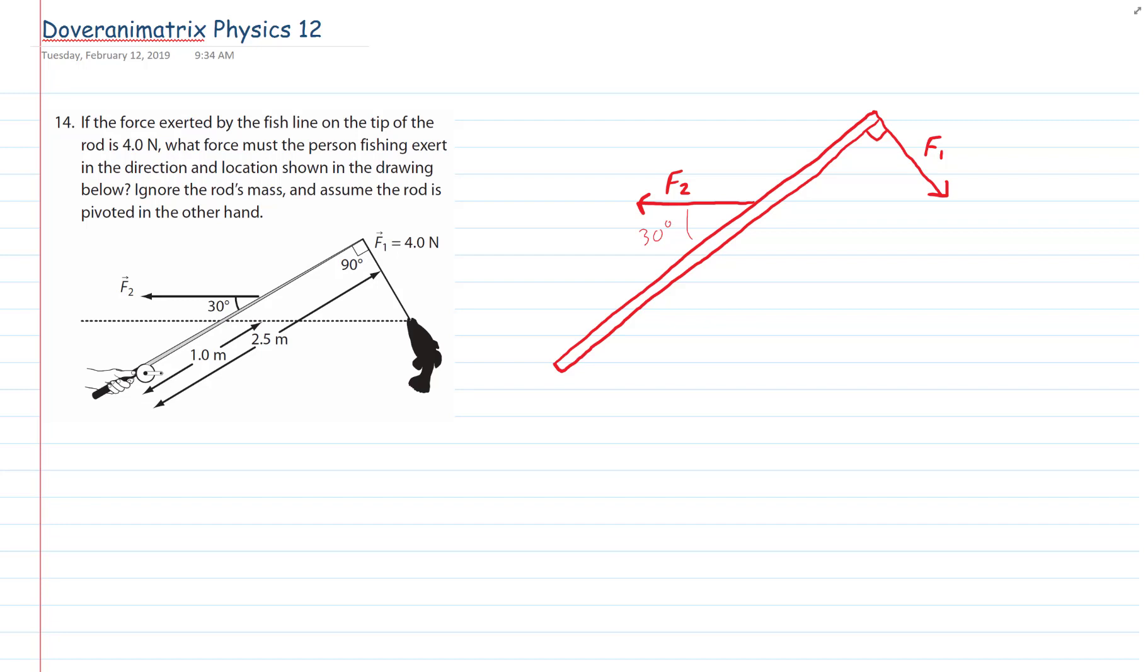If the force exerted by the fish line on the tip of the rod is 4 newtons, what force must the person fishing exert in the direction and location shown in the drawing below? Ignore the rod's mass and assume the rod is pivoted in the other hand.